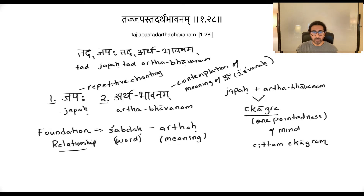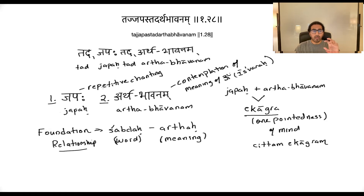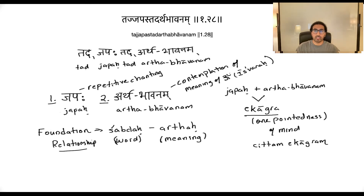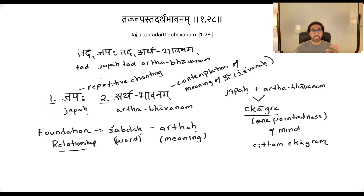Let's break this down. First, 'tadja paha' — japa, from the root dhatu, means repetitive chanting. So japa of 'tad,' meaning 'that,' refers to Om. The sutra is saying: do the japa, the repetitive chanting, of Om — Om, Om, Om — or if you want to elongate it.